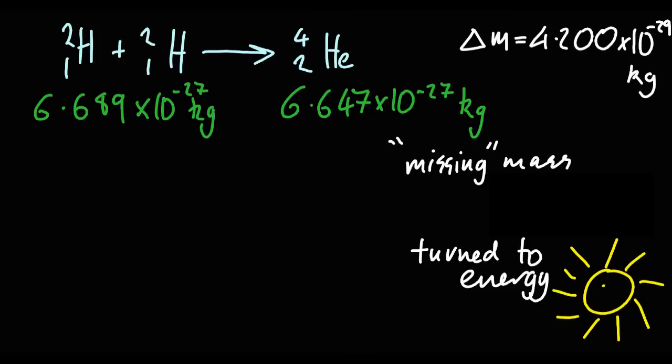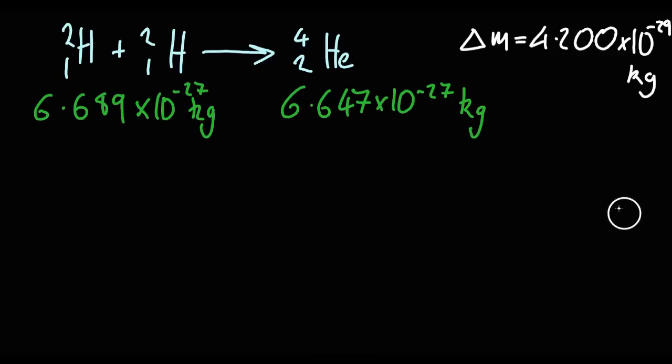In this case, the fusion energy of the Sun. Now we can work out how much energy it is using E equals mc squared. You could argue it's delta E equals delta mc squared. The change in energy is the change in mass times the speed of light squared.